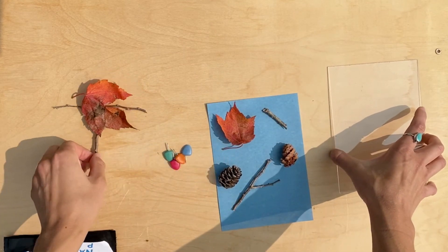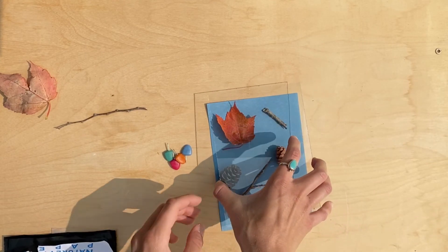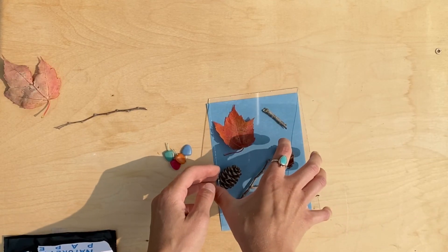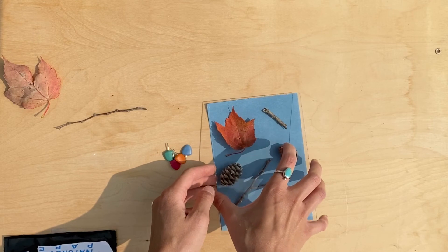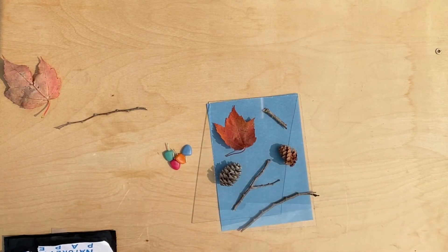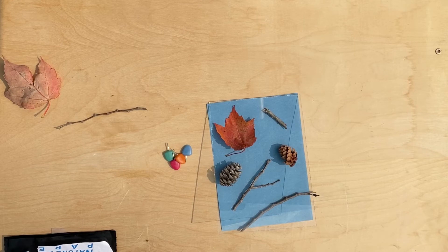And maybe I'll put another twig here. And then I have a little piece of plastic to hold my items in place. But if you don't have plastic, you can use something like saran wrap.